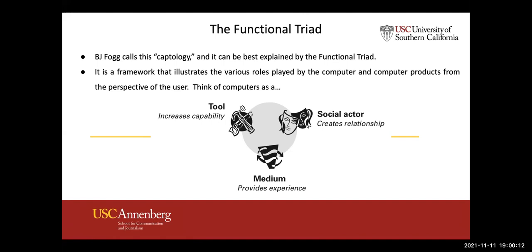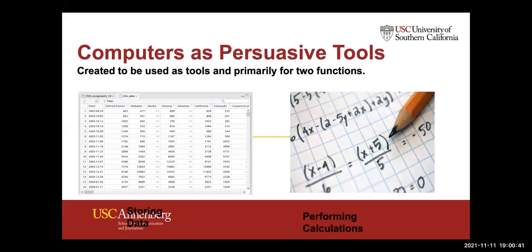I want to zero in on the tool vertex, because it's interesting to think about how even using social media as a tool can act on us persuasively. There are really only two things a computer can do as a tool: store data and perform calculations. That's it. Calculators can do that, and that's what Facebook and everything we're using in digital social media is doing. But it's incredibly persuasive the way they can do it — in ways that humans cannot, in ways that can create human decision-making and shape behavior.